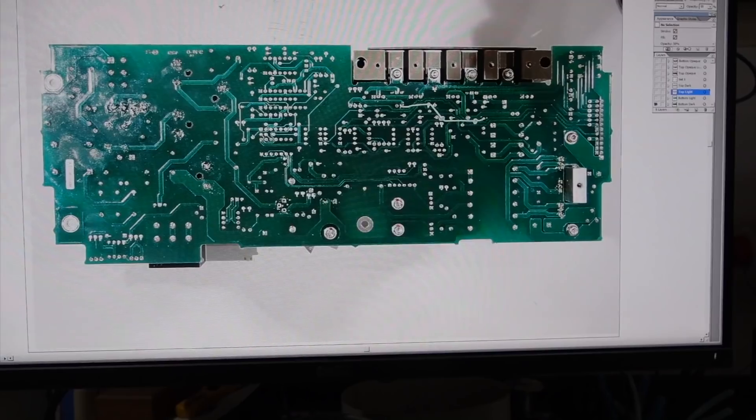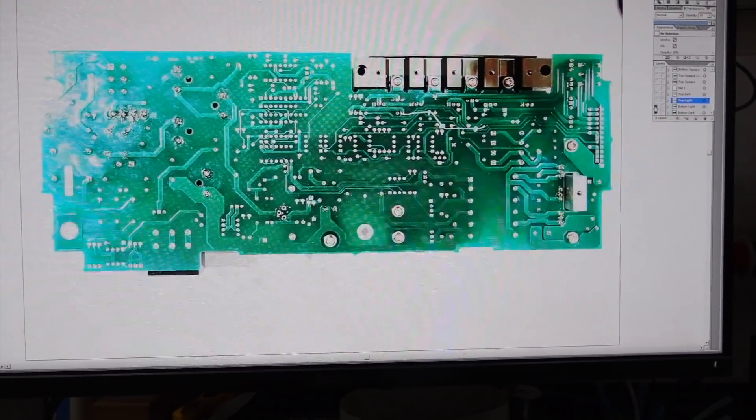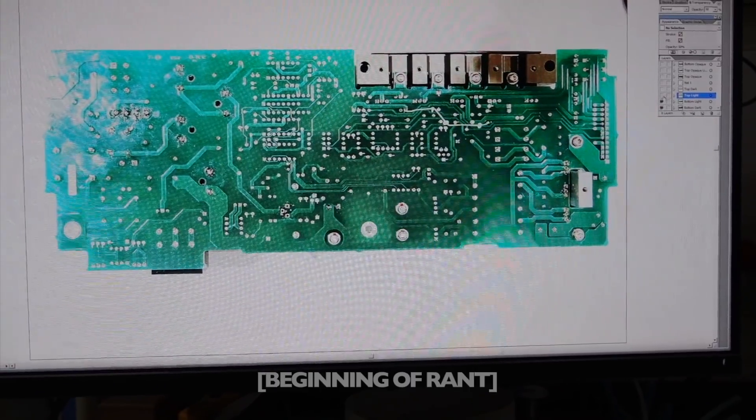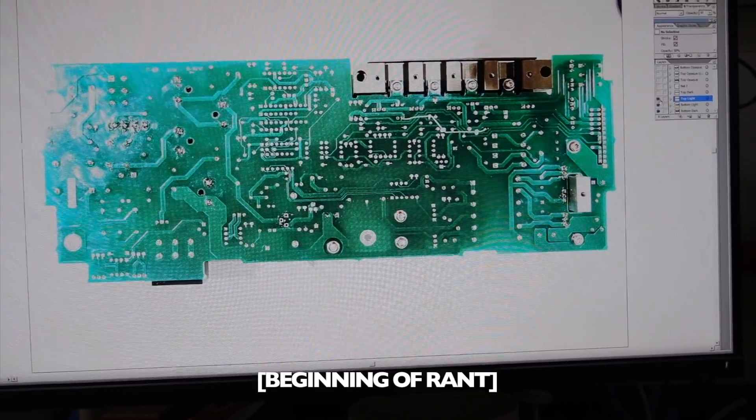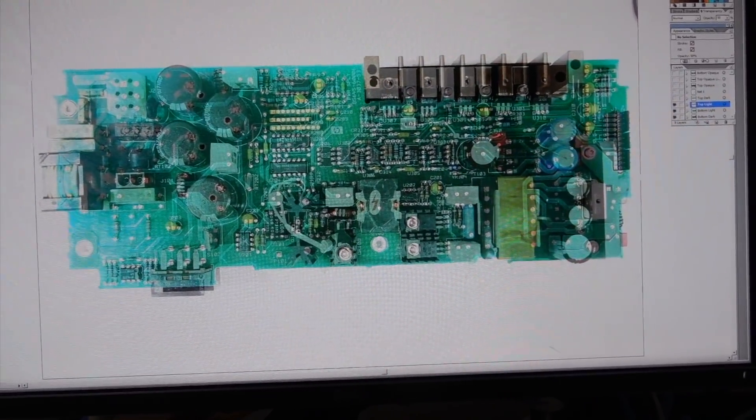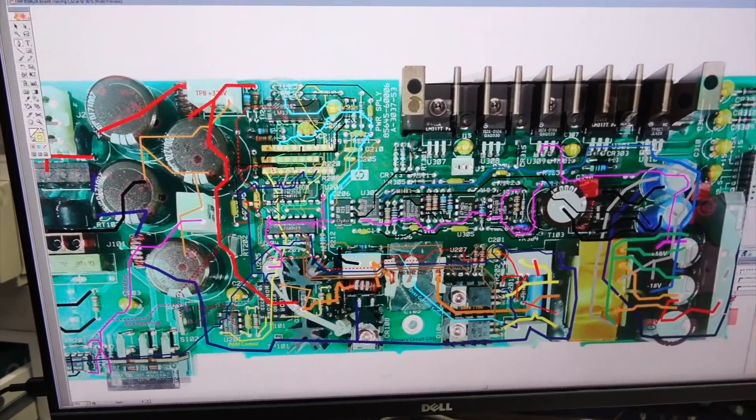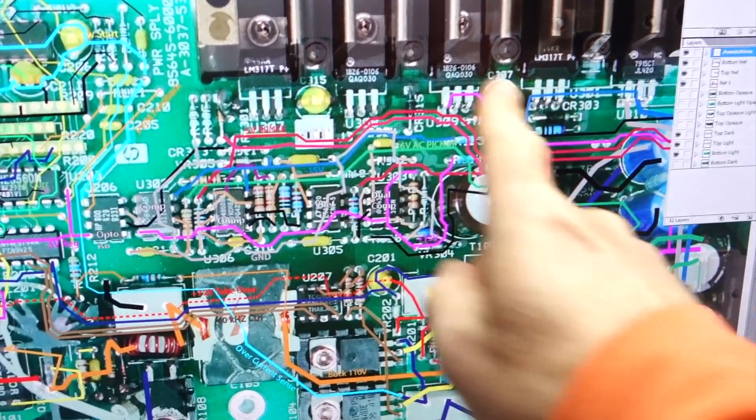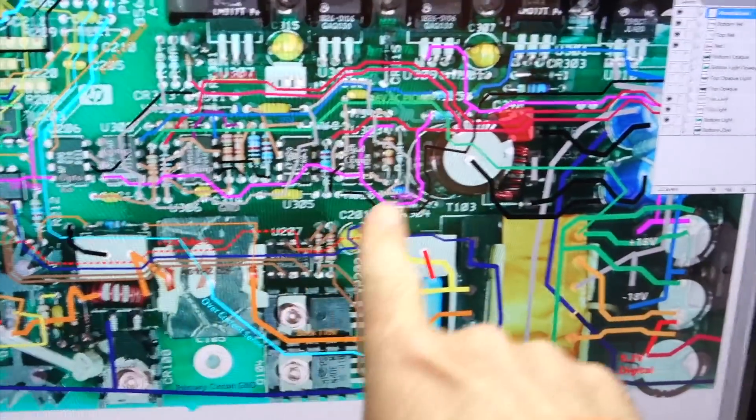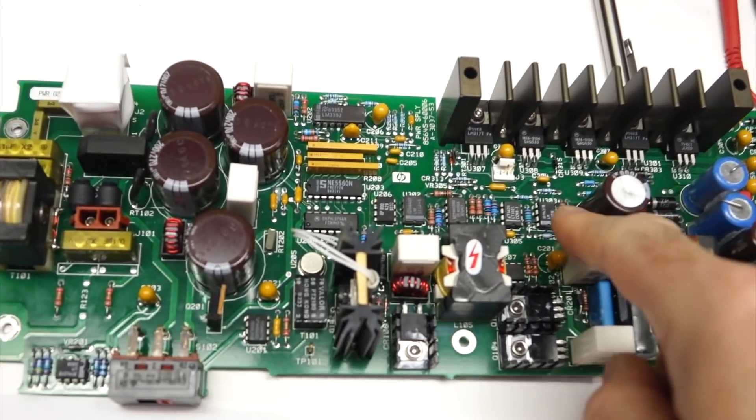While there are many valid ways to skin this cat, I'm not going to do either of those two. The first one, which is just speculative part swapping, would only repair the supply by pure stroke of luck. Now you might have lucked out once or twice, or might not have the equipment or knowledge to do any better, but you should still try.